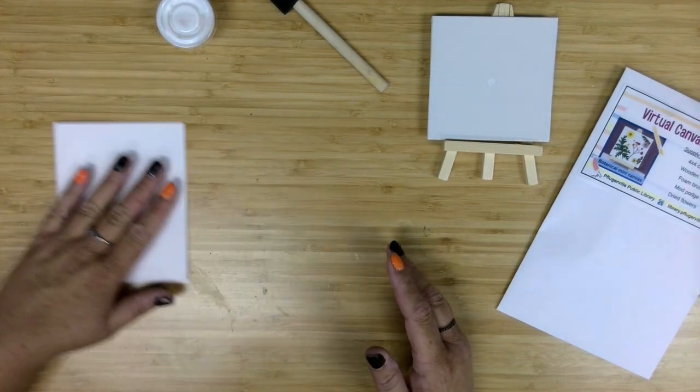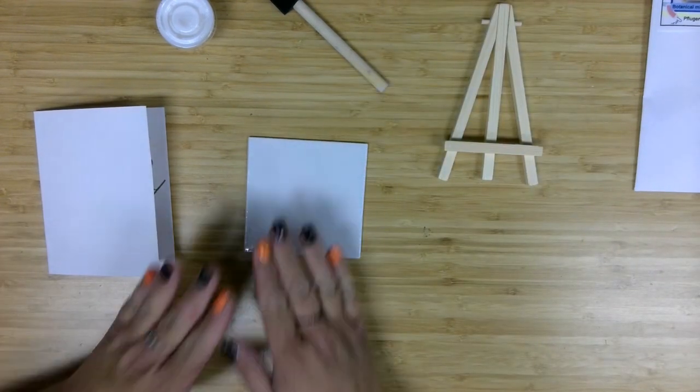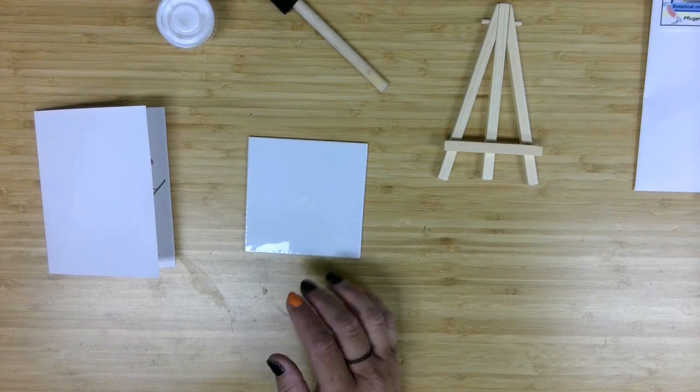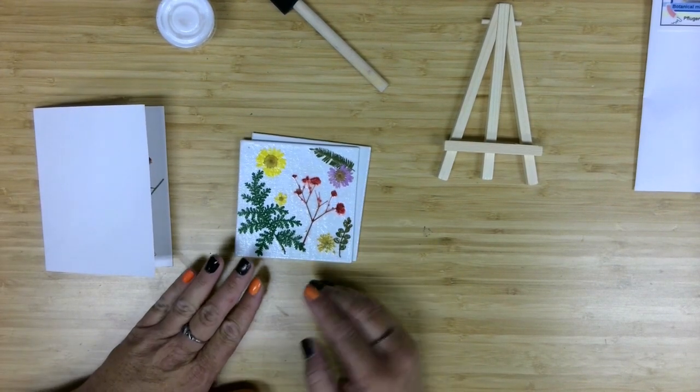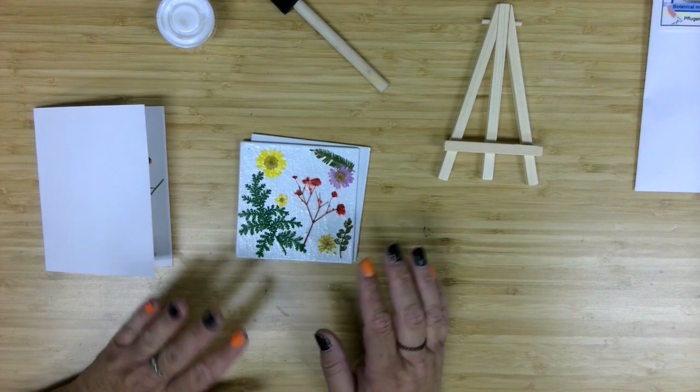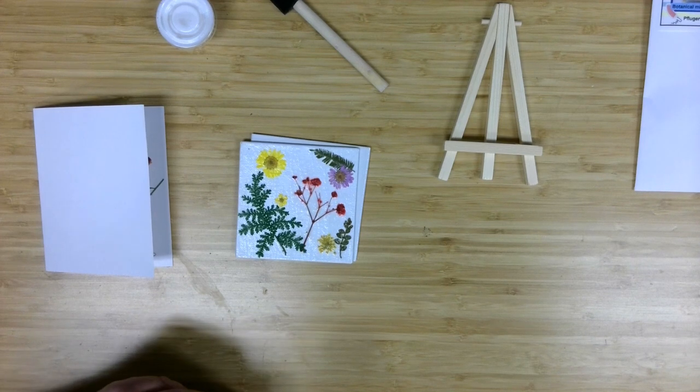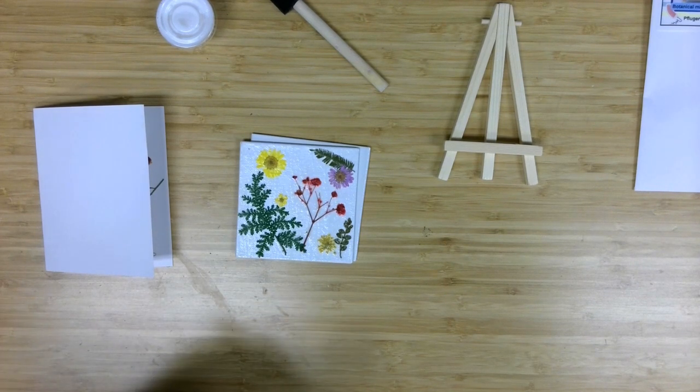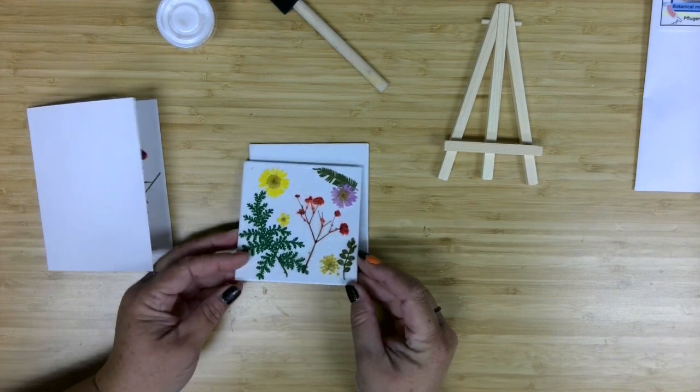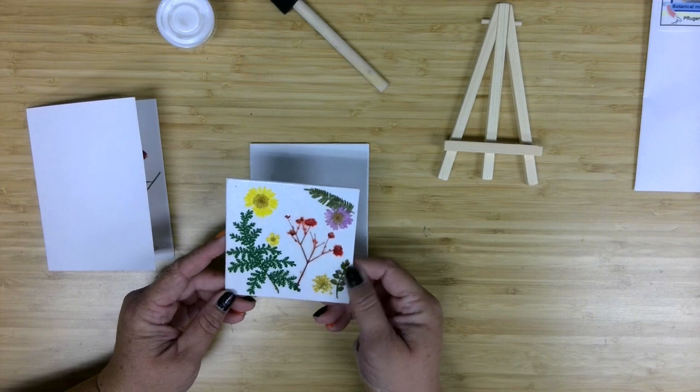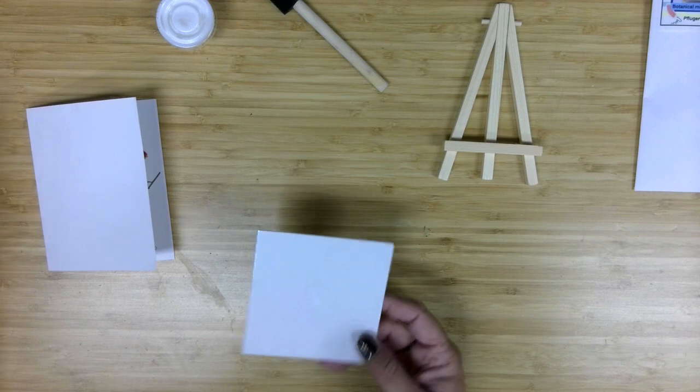So really your first step is honestly going to be deciding how you want your mini canvas to be designed, kind of laying out what you've got. If you decide to go out in your yard or local to you and grab and dry out yourself some local flora, that would be kind of a really cool thing for this project as well. But for today's video we're going to keep it pretty quick and just go ahead and do with what we've got here.